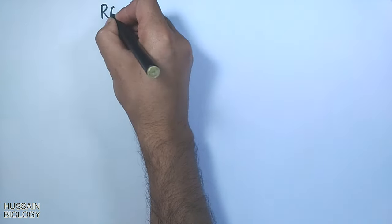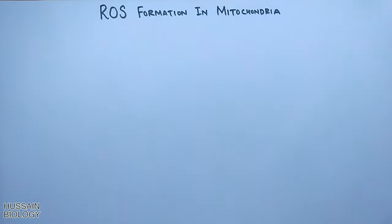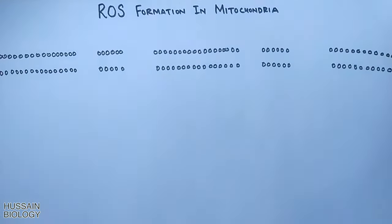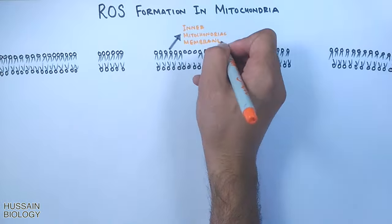In this video we will be discussing ROS formation in mitochondria and how these reactive oxygen species are neutralized. ROS gets generated in the matrix of mitochondria during the electron transport chain.